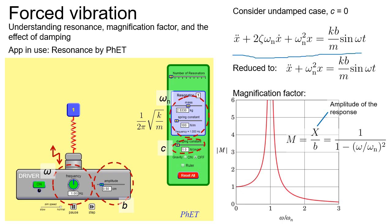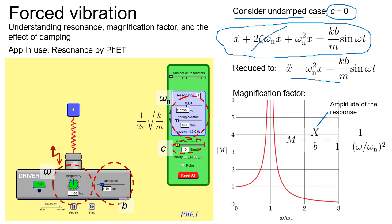Let us bring back the equation of motion for base excitation. For simplicity, let us first consider the undamped case in which c is set to zero. This term disappears, reducing it to a simpler equation. From this simpler equation we can derive the magnification factor M, where M equals capital X divided by B.